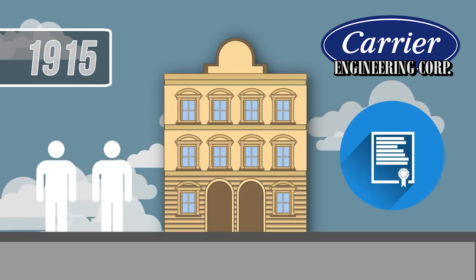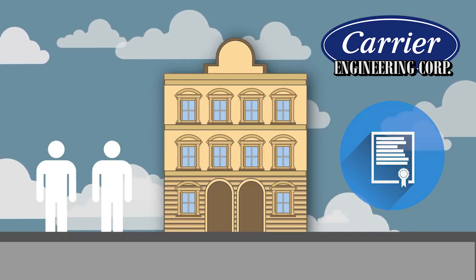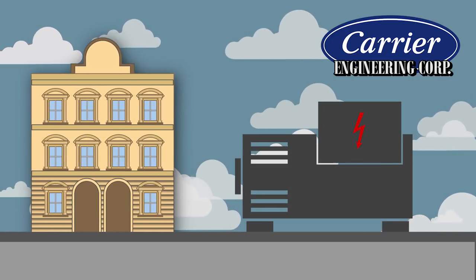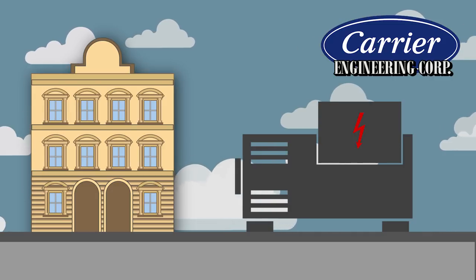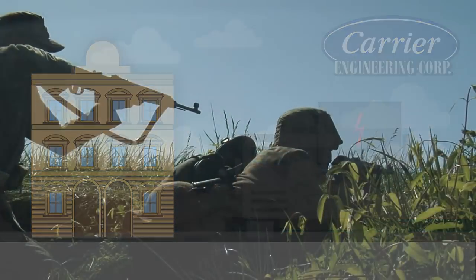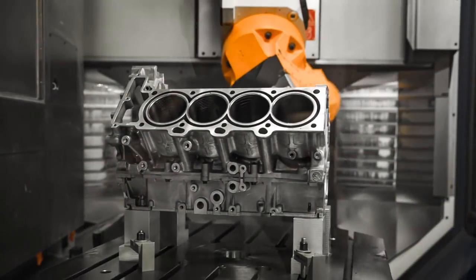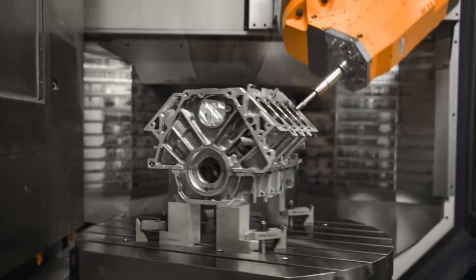This new company started landing contracts for cooling buildings left and right. In 1918, they brought AC to the Atlas Power Company's substations resulting in a more stable power grid and a safer working environment. They helped cool ammunition plants crucial to the war effort as well. Air conditioning was changing the way modern manufacturing took place.